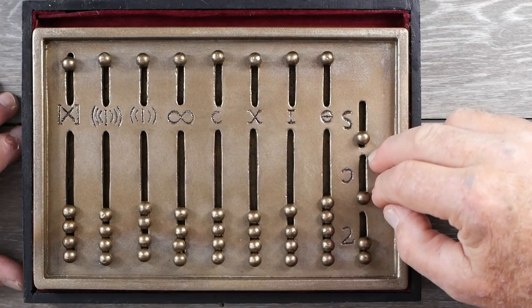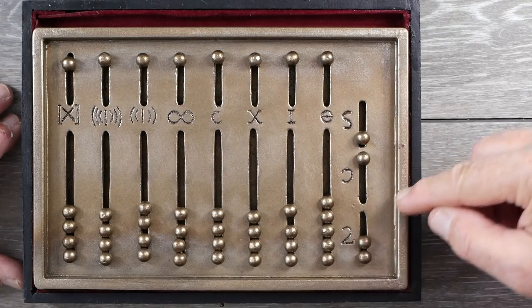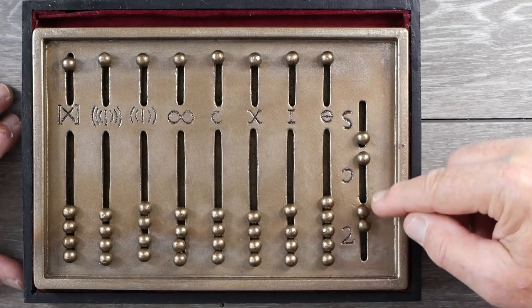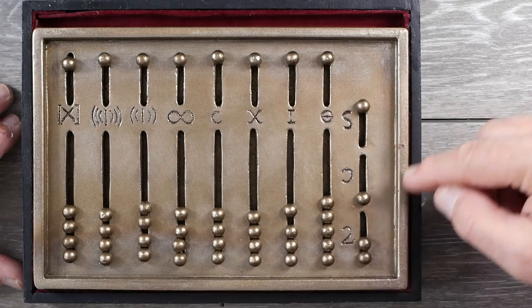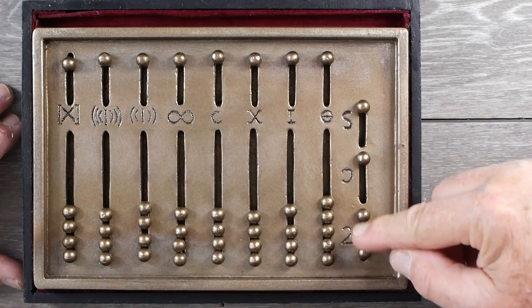So these are sort of like one hundred and forty-fourths: one, two, three, four, five, six, seven, eight, nine, ten, eleven.